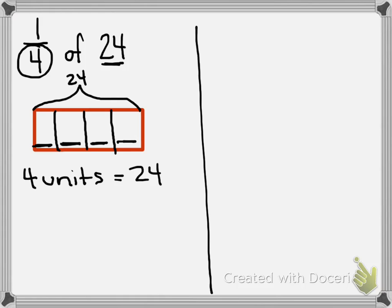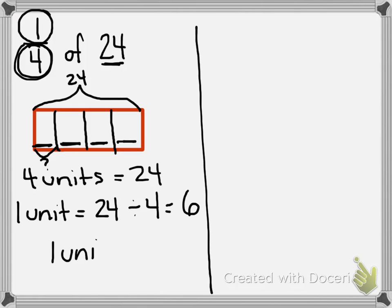Now the question is, how many units am I looking for? Well, I'm going to look back at my numerator. My numerator is 1, so that's telling me that I only need to find the value of 1 unit. So in order to find the value of 1 unit, I'm going to take my whole number, 24, and I'm going to divide that among how many parts I have. I have 4 parts. So 24 divided by 4 equals 6. So 1 unit equals 6.